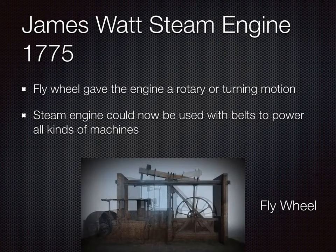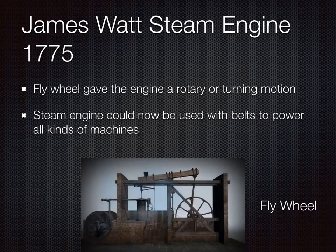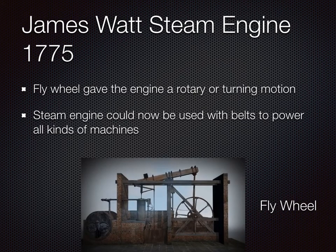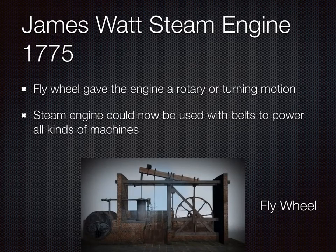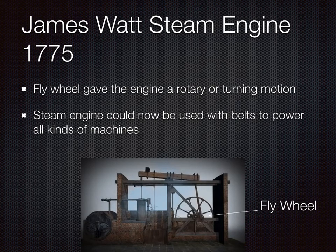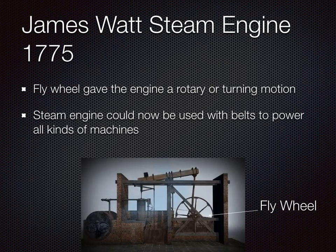It was improved upon by a man called James Watt, who added a flywheel which gave the engine a rotary motion — a turning motion. With this advancement, steam engines could now be used with belts to power all kinds of machines, and it wasn't just used for extracting water from coal mines.